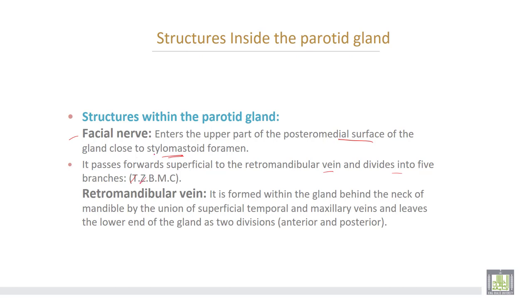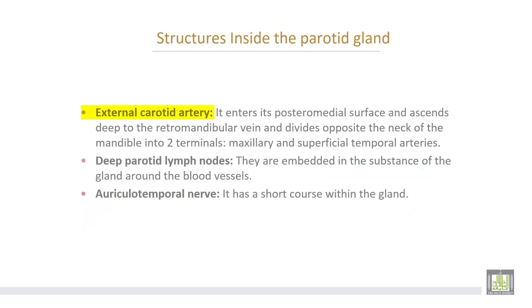The five terminal branches of the facial nerve are: temporal, zygomatic, buccal, mandibular, and cervical. The retromandibular vein is formed within the gland behind the neck of the mandible by the union of the superficial temporal vein and the maxillary vein, and leaves the lower end of the gland as two divisions. The anterior division unites with the posterior auricular vein to form the external jugular vein. The external carotid artery also lies inside the gland; it enters the posteromedial surface, ascends deep to the retromandibular vein, and divides opposite the neck of the mandible into two terminals: the maxillary artery and the superficial temporal artery.